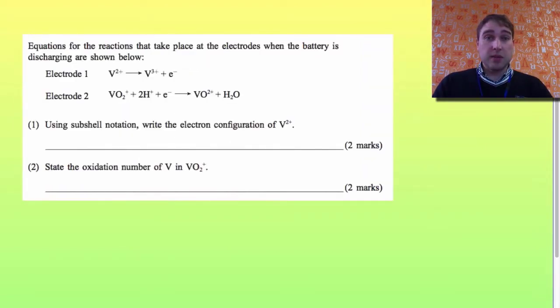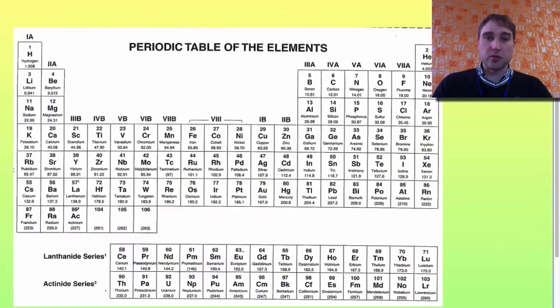It says equations for the reactions that take place are shown below. Using subshell notation, write the electron configuration of vanadium. In this case it's the vanadium ion, vanadium 2+.